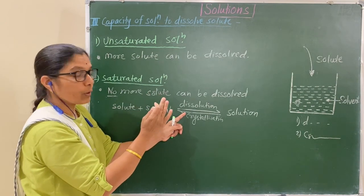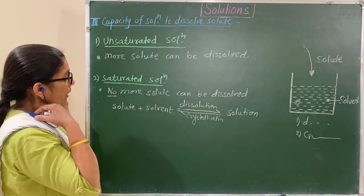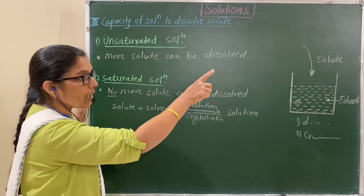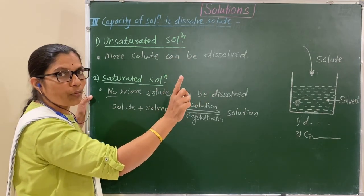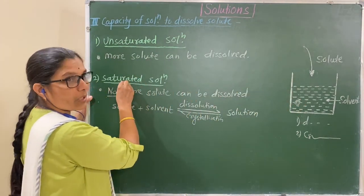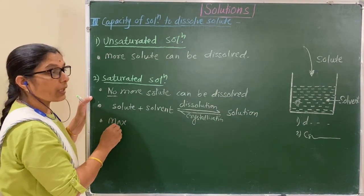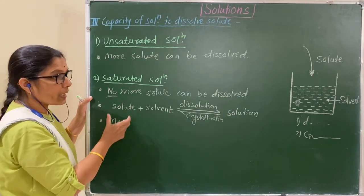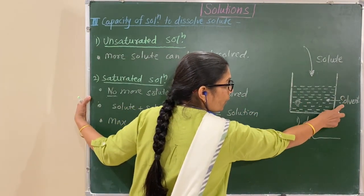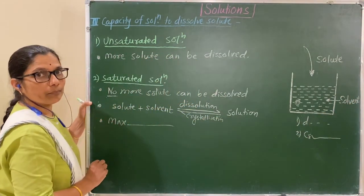At this equilibrium stage, the rate of dissolution and crystallization is the same — the number of molecules leaving the crystal equals the number of molecules forming the crystals. In a saturated solution, the maximum amount of solute is dissolved in a given amount of solvent at a given temperature. Remember this point.